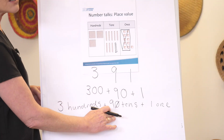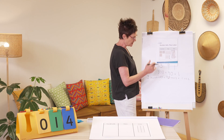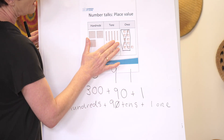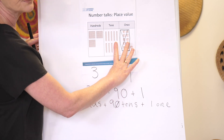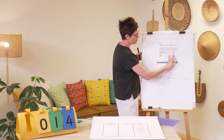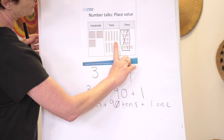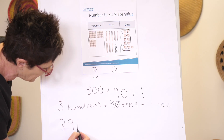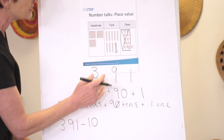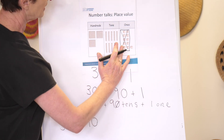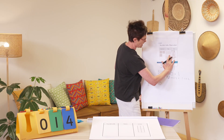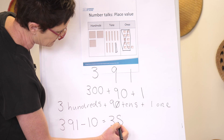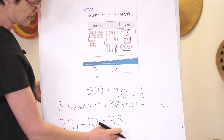Okay, I did make a mistake — it's nine tens, thanks for noticing. Now I'm going to take one ten away from my number. The number sentence is: three hundred and ninety-one take away one ten. I still have three hundreds but now I have eight tens, so my answer will be three hundred and eighty-one. That is ten less than the number.